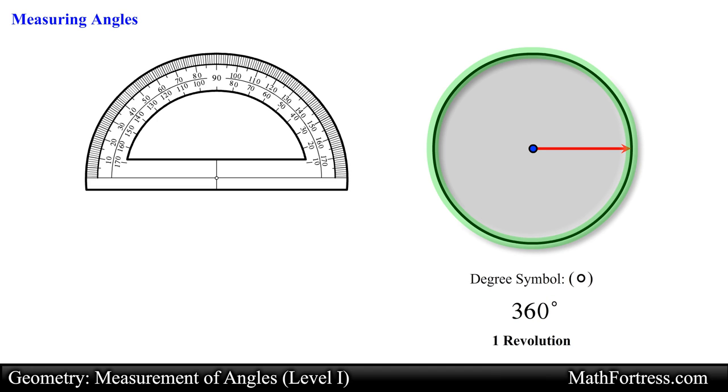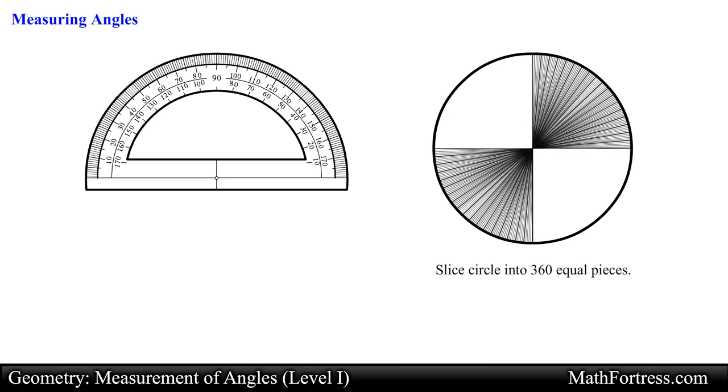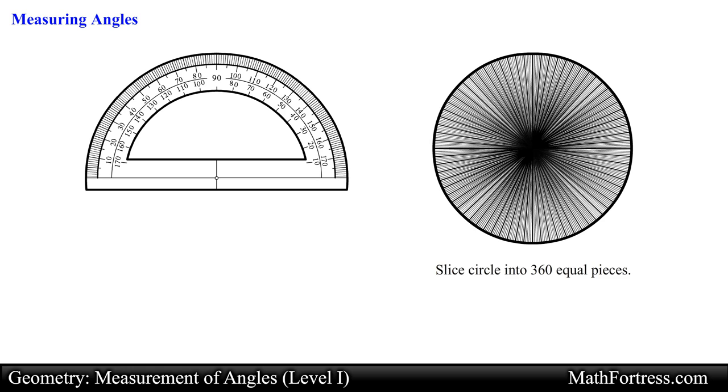Now that we know that if we turn around in a complete circle we would turn 360 degrees, the next thing to understand is the size of a single degree. To get a sense of the size of a single degree let's take a circle and slice it into 360 equal pieces by using straight cuts that go through the center of the circle.